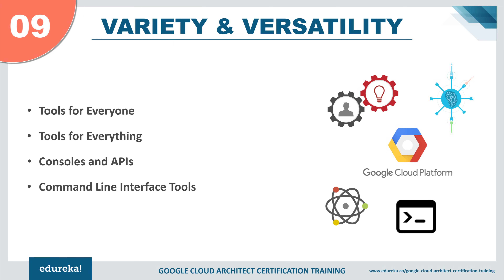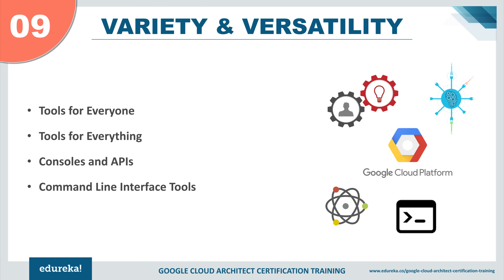Coming up to reason number nine, we have variety and versatility. Once you get started on the Google Cloud Platform, there are tools for everyone and for everything in the IT industry. You can use all these products for development like the developer's console, web UI, and the command line interface tools for Windows, Mac or Linux environments. You also have the option to use RESTful APIs — Google has its own set of managed APIs that can be used in different applications for different purposes, and they are very easy to work with.